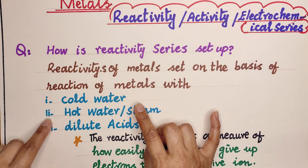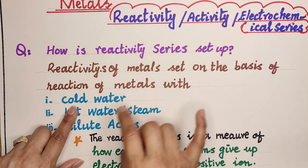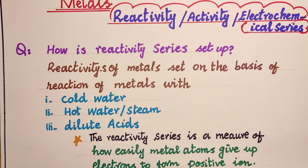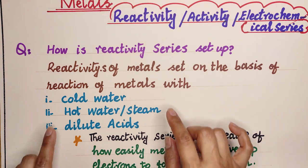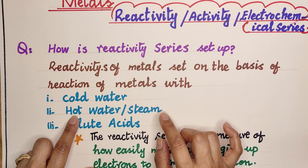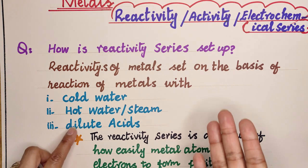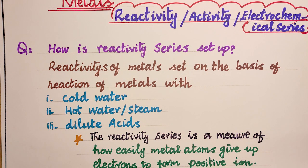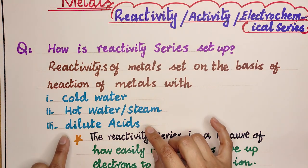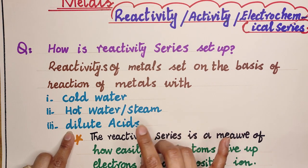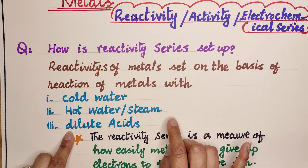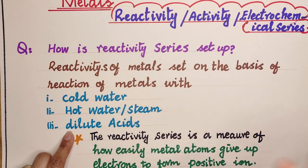If a metal reacts with cold water vigorously, violently, or explodes, then we say that metal is very reactive. But if a metal reacts with water or steam very slowly or gives no response, we say it is not very reactive. The same applies with dilute acids — if metals react vigorously or explode, the metal is highly reactive.